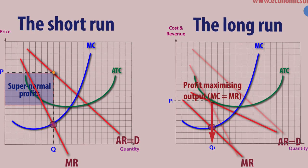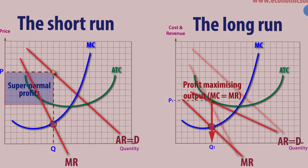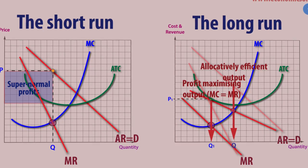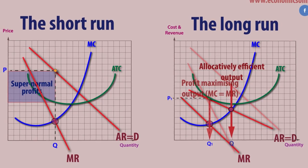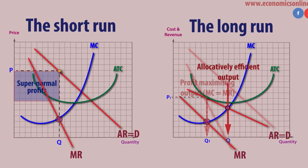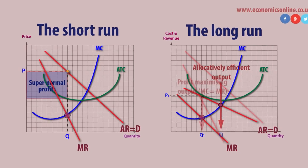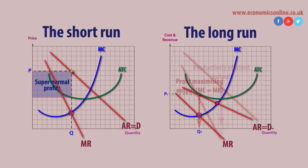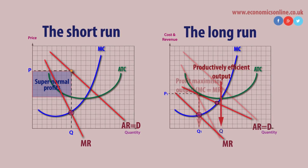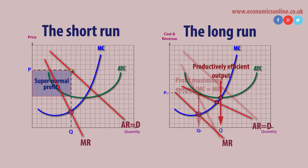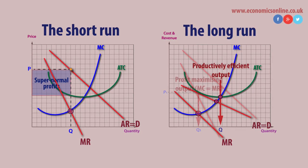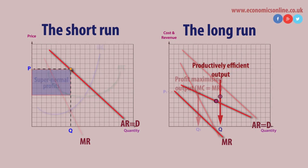Despite increased choice and innovation, firms operating under conditions of monopolistic competition experience allocative inefficiency, with price being greater than marginal cost, and productive inefficiency, with average cost being above its lowest possible point. This is true in both the short and long run.